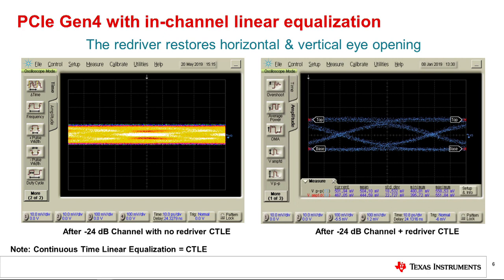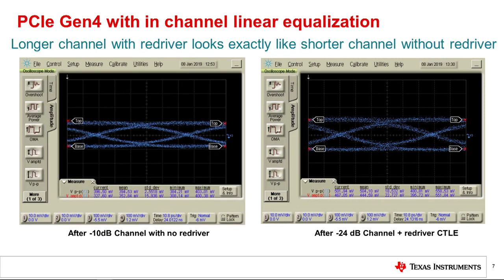This leaves open the possibility to architect channels which have more loss and still recover the data with margin at the system PCIe RX. Here we use a shorter channel to demonstrate how the equalization looks to a PCIe system RX. Remember, the purpose of linear equalization is to make the effective channel appear shorter and less lossy to system PCIe receivers.